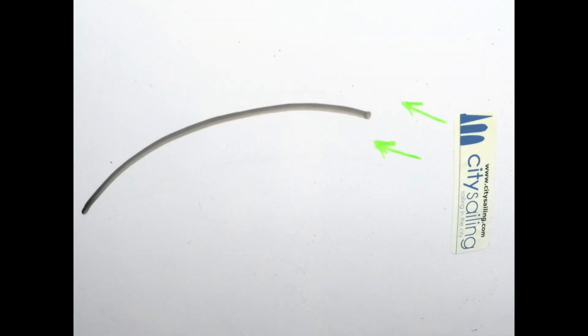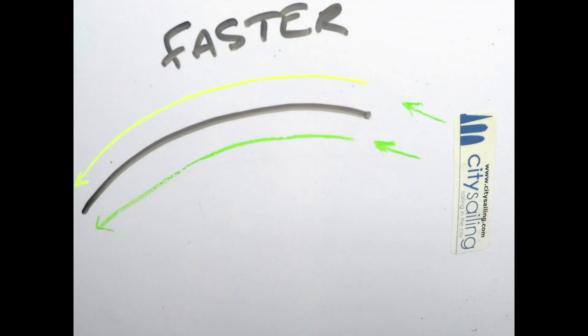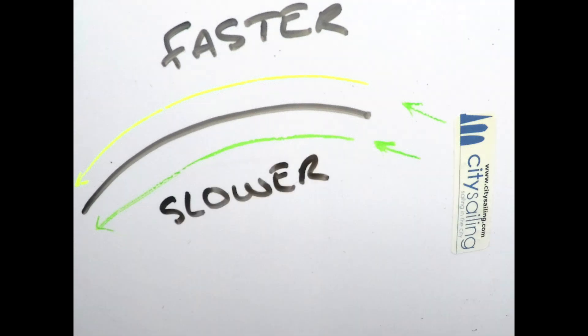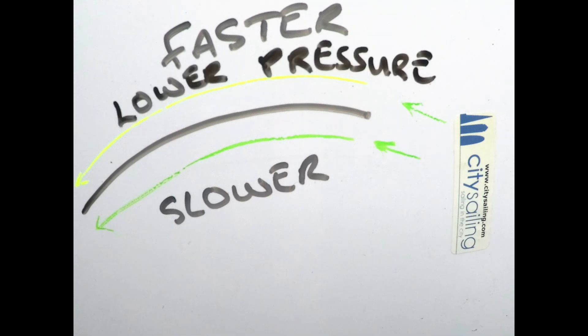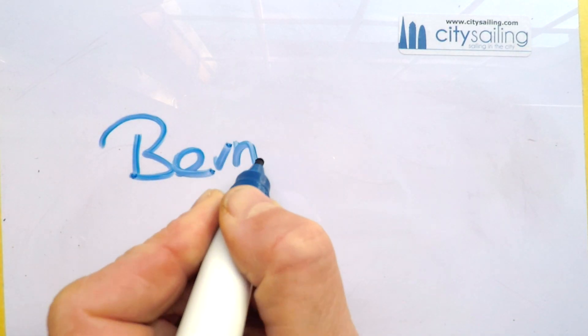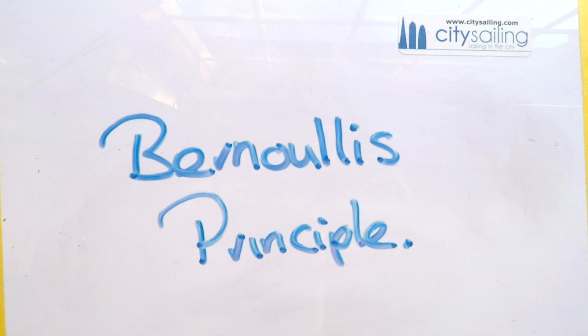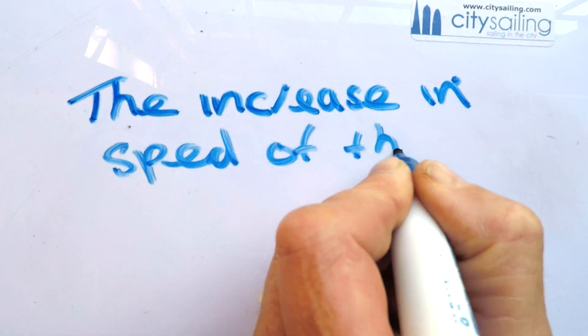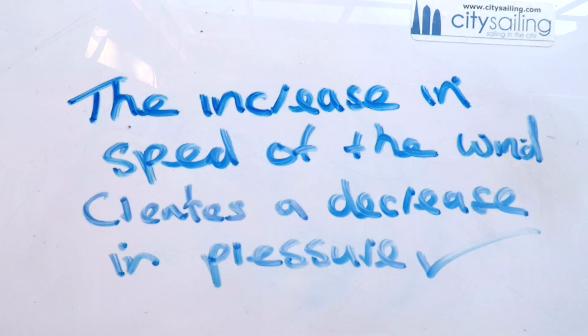The Bernoulli effect on the sail works like this: the wind splits at the front of the sail, travels around the top of the sail and around the bottom of the sail. The wind that travels around the top of the sail travels faster, and the wind on the inside — on the bottom of the sail — travels slightly slower. The difference in speed, because the wind is speeding up on the outside edge, creates a lower pressure. This is the Bernoulli effect on your sail.